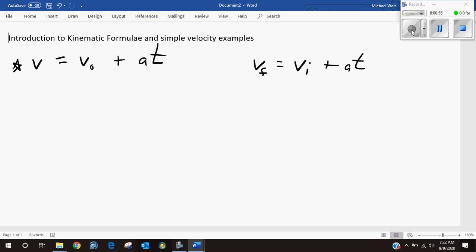The v subscript naught means that it's at time zero, and then this is the v that occurs if there's acceleration for a time. So if you read this like a sentence, your final velocity is a combination of your initial velocity